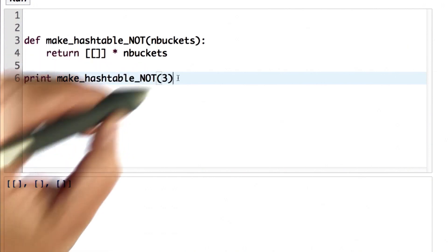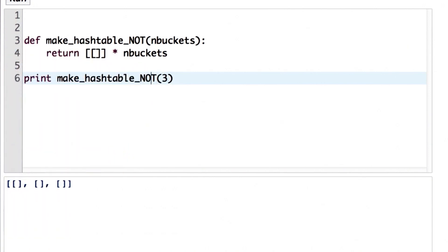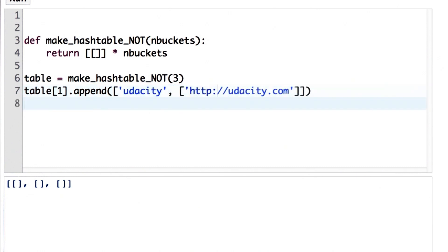There's one big problem with this approach. And I'll show you a hint why it is. And then we'll have a quiz to see if you can figure out why. So now instead of just printing out the result, we're going to assign it to a variable called table. And now we're going to mimic what would happen when we add something to a hash table. That means we're going to add something to one of the buckets. Let's pick bucket one. And let's assume we're going to add the entry for Udacity with one URL.